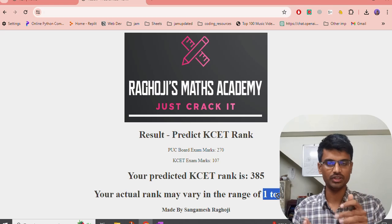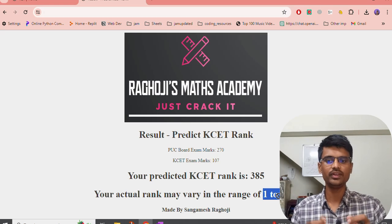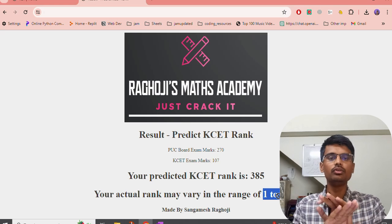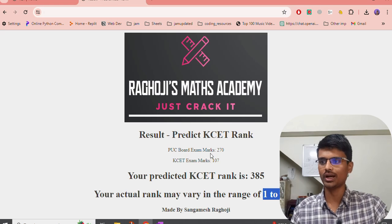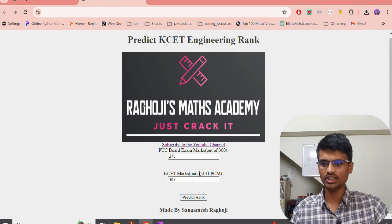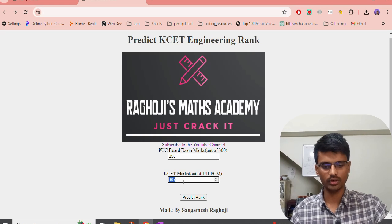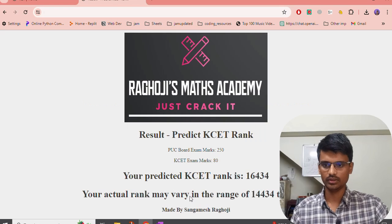Coming to the website. The website link will be provided in the telegram group. You have to join the telegram group. There you will find the rank prediction link, the tools link. So, say our student got 270 marks, and out of 141 marks he has got 107 marks. Let's see what is the rank he can expect. This student can expect a very good rank, 385 rank. This is the predicted rank from the tool.